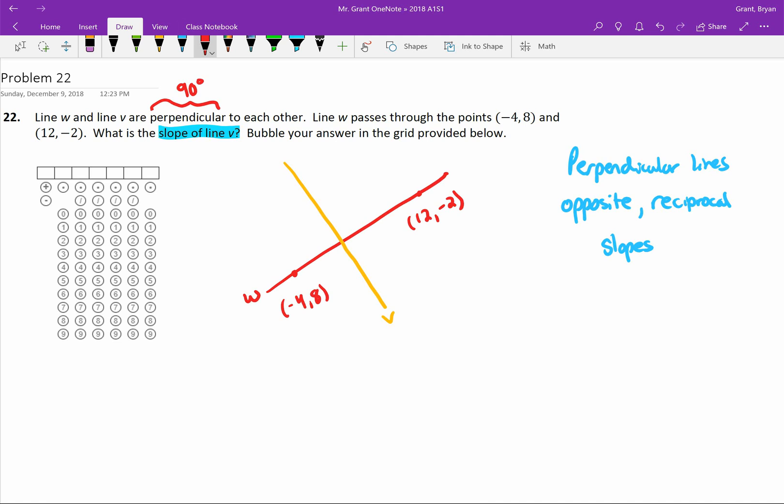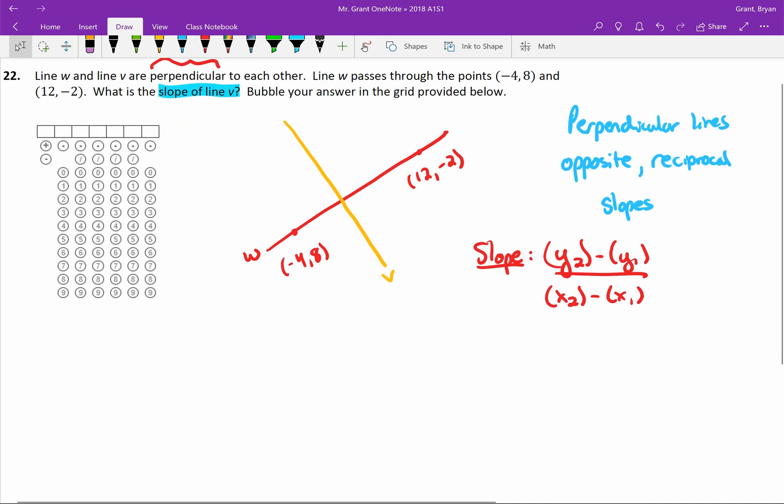And line W gave us two points, which is very useful. Because we should know that our slope formula is that Y2, right, minus Y1 over X2 minus X1. And we just need to fill those in.